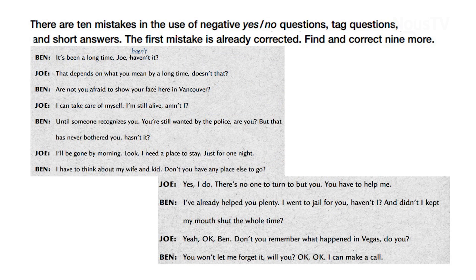Here you have a sheet, and there are 10 mistakes using yes-no questions or tags. The first one is corrected for you. I want you to read through the sentences and find nine more mistakes, and tell me what they are and correct them. 'That depends on what you mean by a long time, doesn't that?' — 'Doesn't' is the mistake. It should be 'doesn't it?' 'Are not you afraid to show your face in Vancouver?' — 'Are not' should be the contracted form 'aren't'.